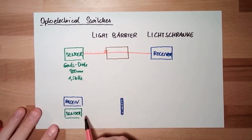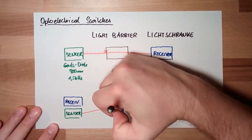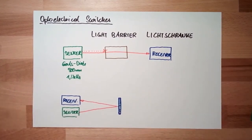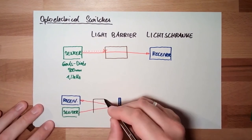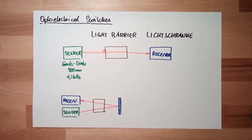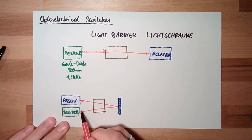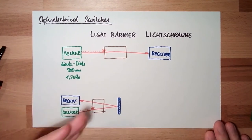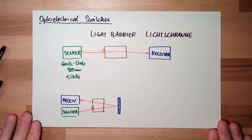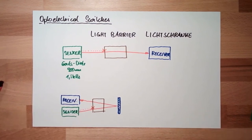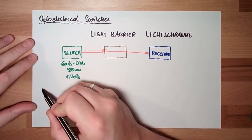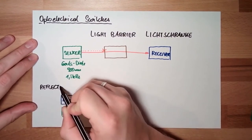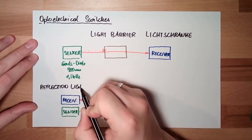Usually, the light from the sender is reflected in this reflector and is reaching the receiver. Again, if something is in between, some good, then the light is blocked. This here is called reflection light barrier.